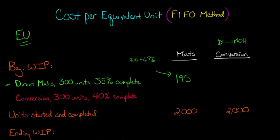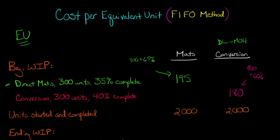For our conversion costs, we're going to have 180. The reason is we take 300 units and multiply by 60%. We have 300 units that are 40% complete, so 60% remains to be completed. So 300 × 60% = 180. That's what we put for our conversion costs. Now we've taken care of the beginning work in process for both the direct materials account and the conversion account.